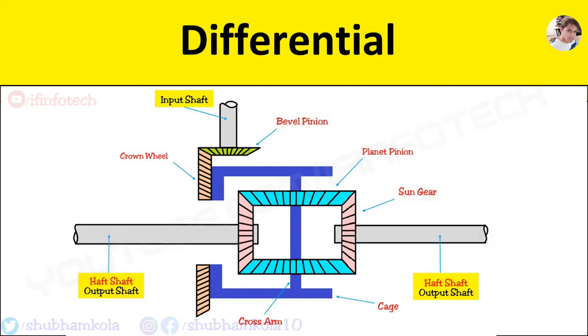Now you see the construction. Here differential consists of a crown wheel, two types of bevel gear, cage and cross arm.